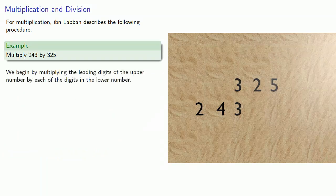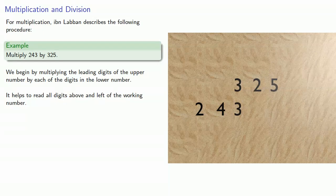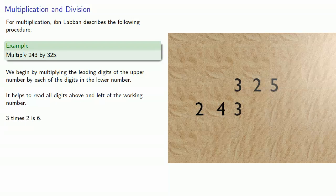We begin by multiplying the leading digit of the upper number by each of the digits in the lower number. It helps to read all the digits above and left of the working number. So the leading digit of the top number is 3, so we'll multiply each digit of the lower number by 3. So 3 times 2 is 6, which we set down.